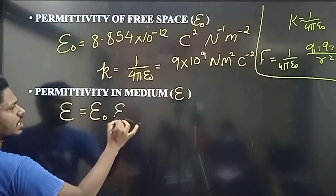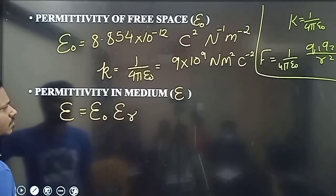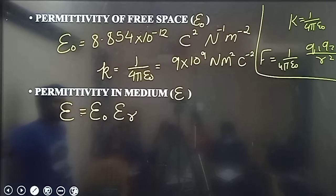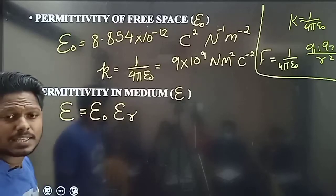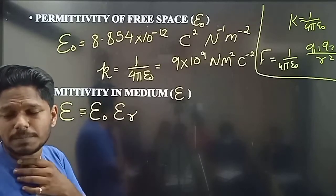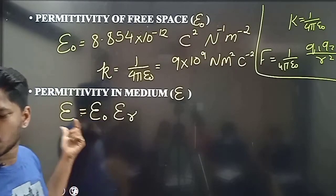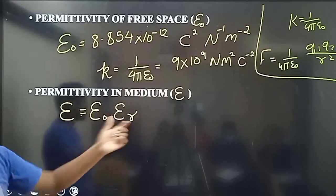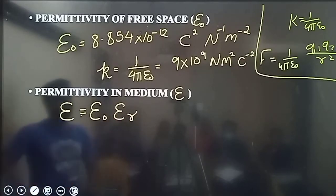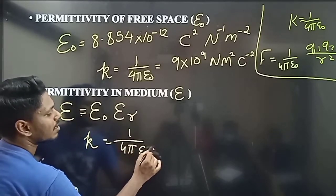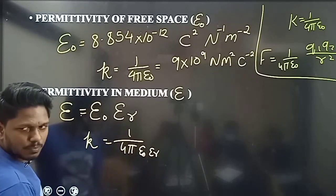In a medium, the formula becomes F = KQ1Q2 over (epsilon_r × R²). Epsilon_r is the relative permittivity of the medium. For example, water has epsilon_r value of about 80. So total epsilon equals epsilon_r × epsilon naught. K becomes 1 by 4 pi epsilon_r epsilon naught.